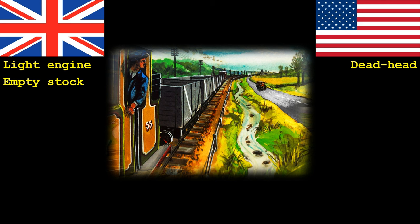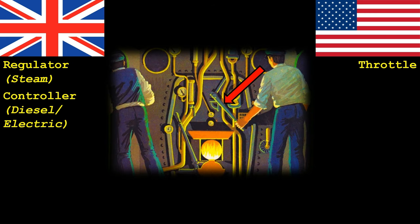There are various controls which are important for controlling a locomotive, and some of the names for these controls do vary from the UK to the US. The first one we are going to look at is the lever used to control a locomotive's speed. In the United States this lever no matter what loco it is attached to is known as a throttle. In the UK however you would call this a regulator if it's attached to a steam engine, and a controller if it's attached to a diesel or an electric engine.